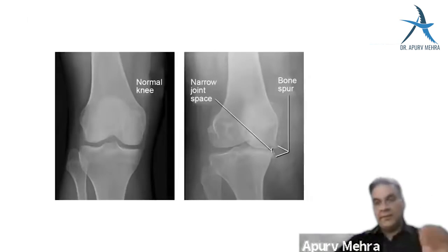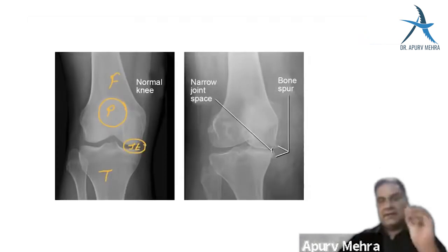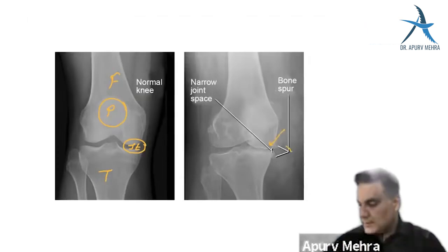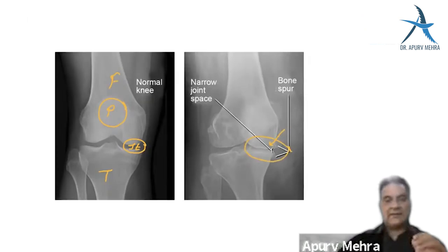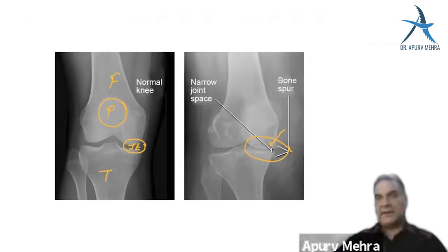One of the commonest diseases you'll see in the world is osteoarthritis. The patella is in the center, femur above, tibia below — the joint space is occupied by cartilage. X-rays show bone and soft tissue but cannot show cartilage. Reduction in joint space means arthritis — destruction of cartilage — and osteoarthritis is the commonest arthritis in the world.